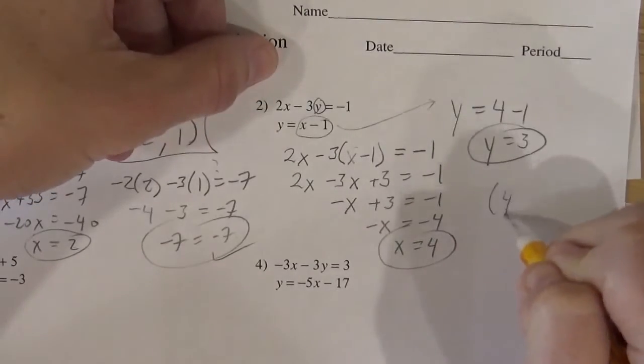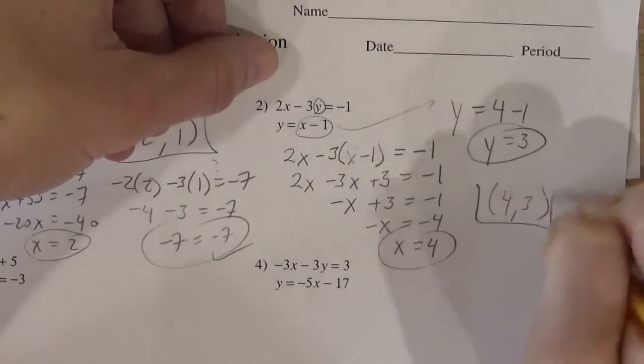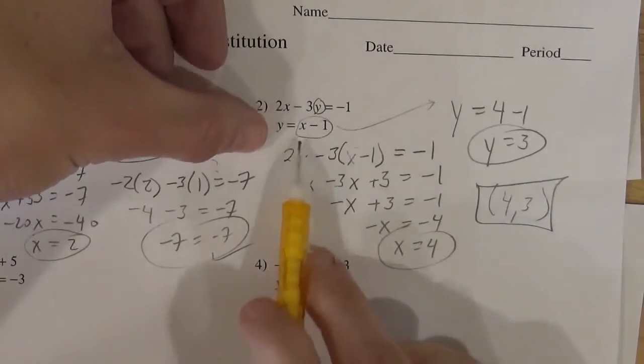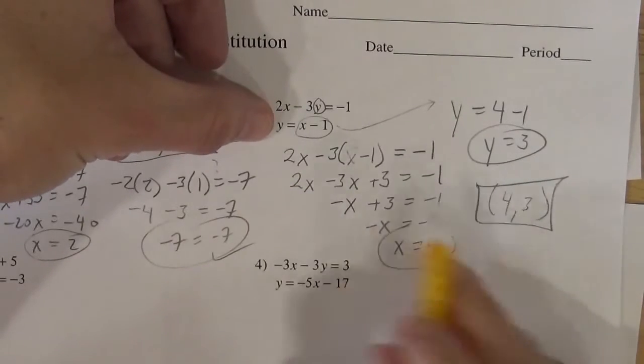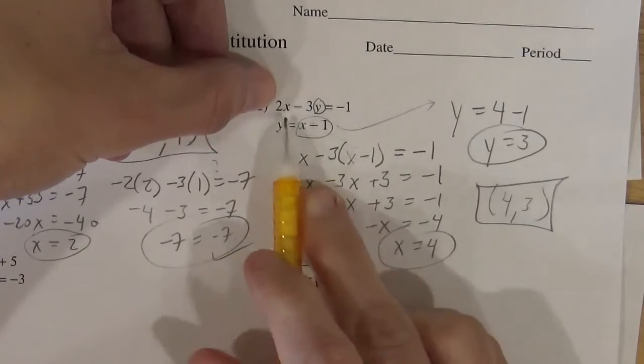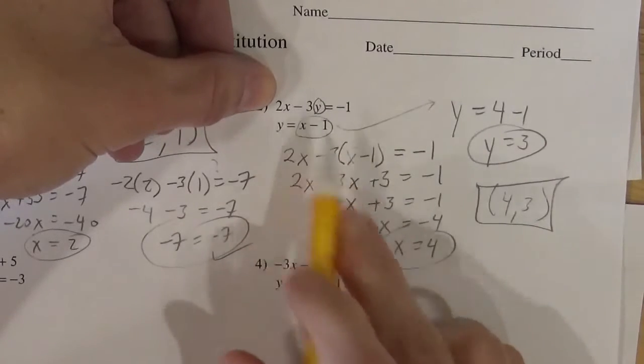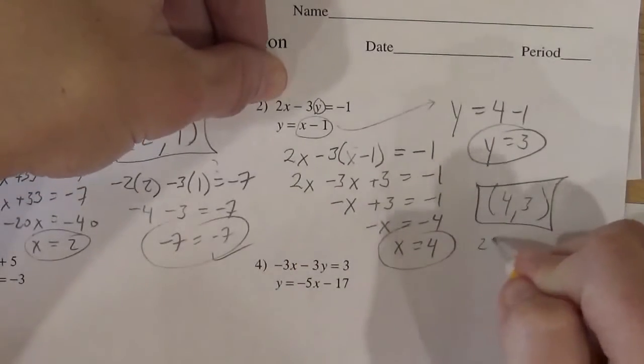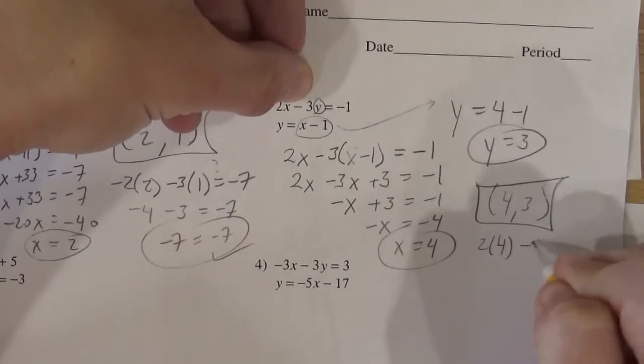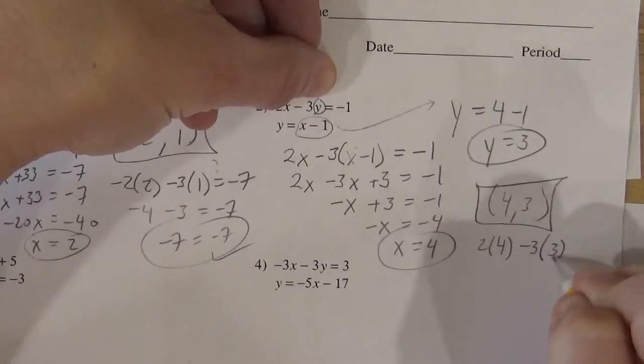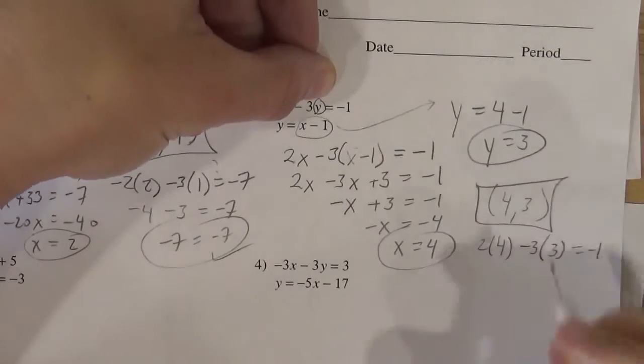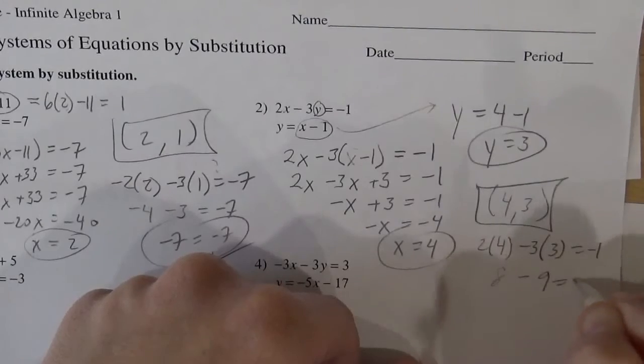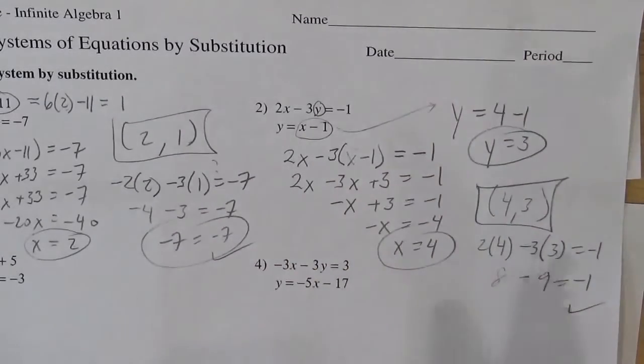And so we've got the point 4, 3. And that's our answer. So you can definitely tell it works in this one. The 3 will equal 4 minus 1. Let's check to make sure if it works in this one. When the x is 4, the y is 3. So I've got 2, the x was 4, minus 3 times the y was 3, equals negative 1. So does 8 minus 9 equal negative 1? Yes it does. Awesome.